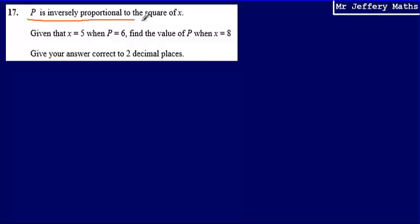So the first thing we're going to look at is this statement here. We're told that P is inversely proportional to the square of X. How we can interpret this statement is that P is equal to K, which is just a constant, over X squared, the square of X.